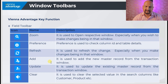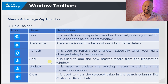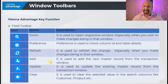The next one is the field toolbar. At the level of the field you would be able to see the zoom button, used to open the respective window especially when making changes within that window. Then preferences, used to check the column ID and table ID details. Then the refresh button, used to refresh changes especially when you make changes in that particular window.